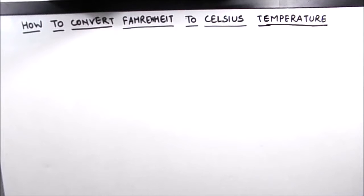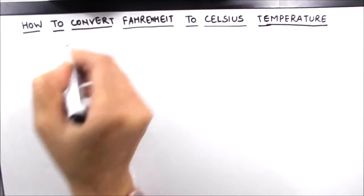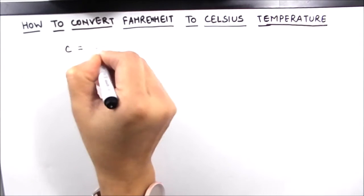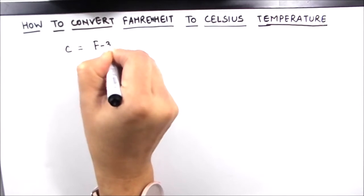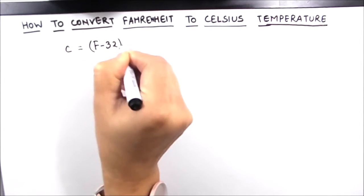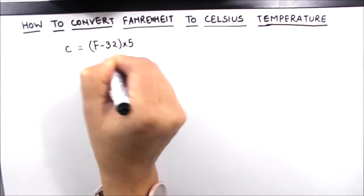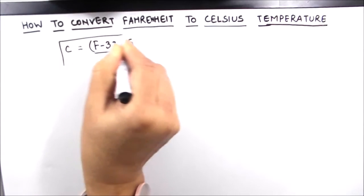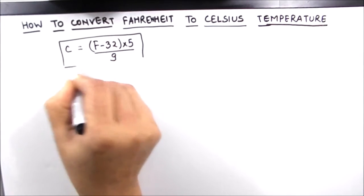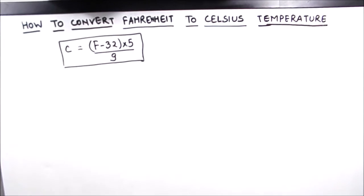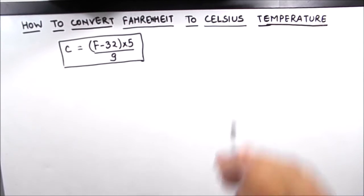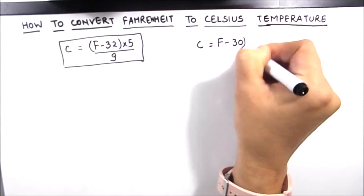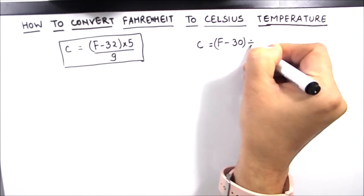The formula we are using to convert from Fahrenheit to Celsius is C equals F minus 32, times 5, divided by 9. This is the formula we are going to use to find the temperature in Celsius when temperature in Fahrenheit is given. There is also an approximate formula for quick reference, which is C equals F minus 30, divided by 2.